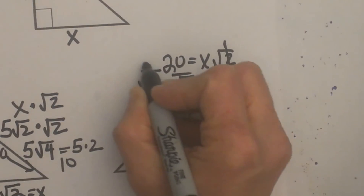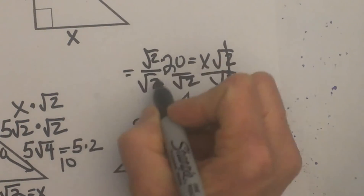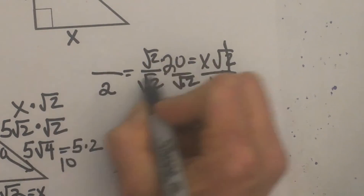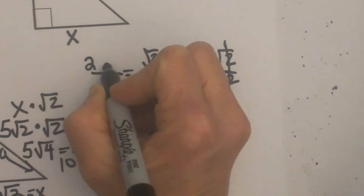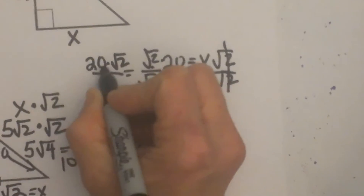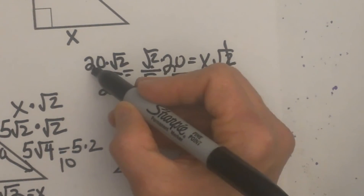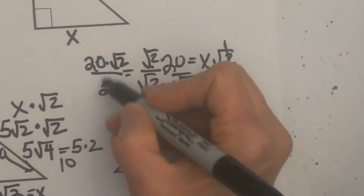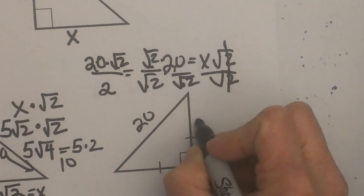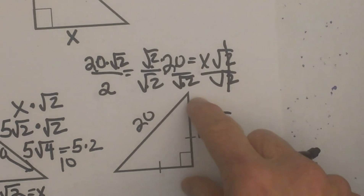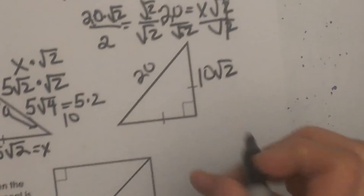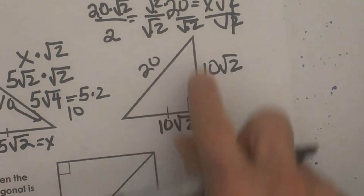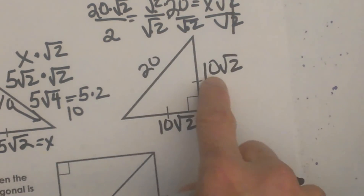So I am going to rationalize by multiplying the top and the bottom by the square root of 2. The square root of 2 times the square root of 2 is the square root of 4, which is 2. On top I have the square root of 2 times 20, giving me 20 square root 2 over 2, which simplifies to 10 square root 2. That is the length of one leg. Since the two legs are congruent, both legs are 10 square root 2. That is how you go from the hypotenuse back to find a leg.